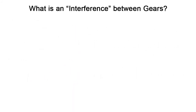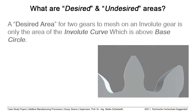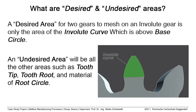What is interference? It is the unwanted phenomenon that takes place between two meshing gears when the top area of the tooth of the first gear comes in contact with any of the undesired areas of the second gear. The undesired areas of a gear that should not come in contact are: tooth tip, tooth bottom under the base circle, and material of root circle. A desired area for two gears to mesh on an involute gear is only the area of the involute curve which is above the base circle. Undesired areas include tooth tip, tooth root, and material of root circle.